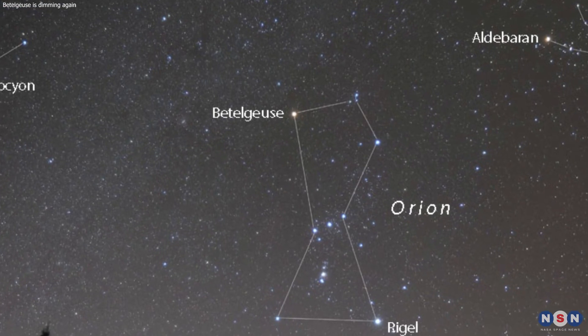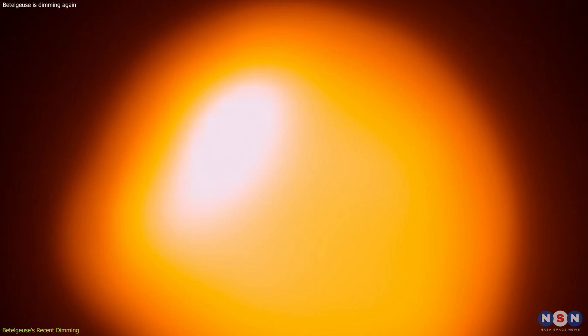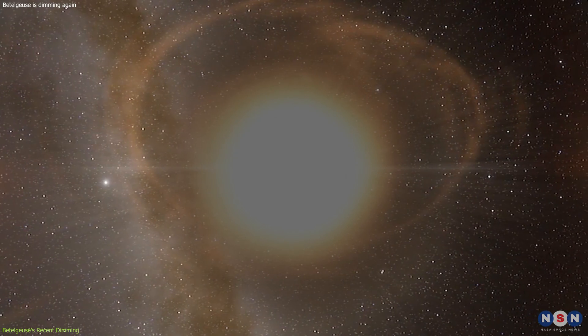Betelgeuse, a red supergiant star in the constellation Orion, has long captured the imagination of astronomers and stargazers alike. Its recent dimming, however, has added a new layer of intrigue to this celestial giant.